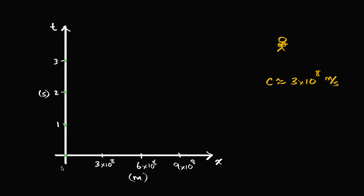So you could consider my path on this diagram — where I'm plotting time and space, at least in the x direction — it's going to look like a straight vertical line at x equals zero. That would be my path on this time and space diagram.